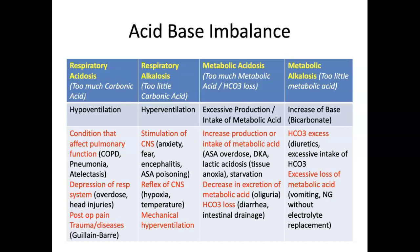Respiratory acidosis involves too much carbonic acid, usually from an individual who is hypoventilating. Conditions that affect pulmonary function include COPD and pneumonia. Atelectasis is a collapse of the alveoli. Depression of the respiratory system can occur through an opioid overdose or a head injury affecting the respiratory center in the brain. Post-op pain and receiving too much narcotic is another cause. Conditions affecting the chest wall include diseases affecting innervation, such as Guillain-Barré syndrome or polio.